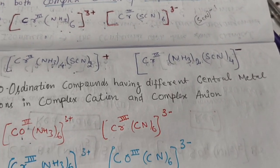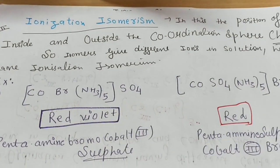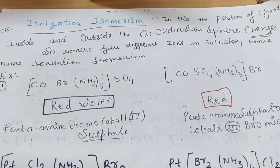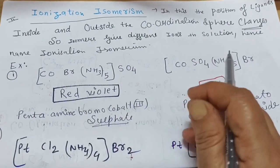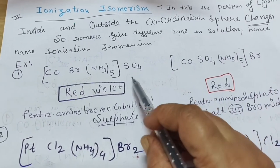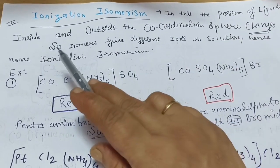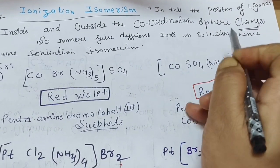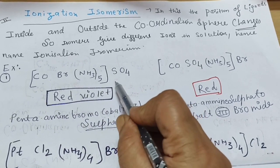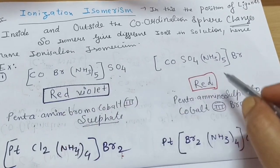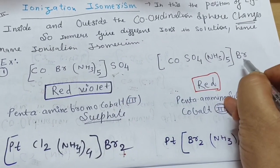The next type is ionization isomerism. When these complexes are dissolved in water, they give different ions and different colors. In ionization isomerism, the position of ligands inside and outside the coordination sphere changes. For example, [Co(NH₃)₅Br]SO₄ — when SO₄ moves inside the coordination sphere and Br comes outside, the color changes from red-violet to red. The compound gives sulfate ions or bromide ions depending on which is in the ionization sphere.